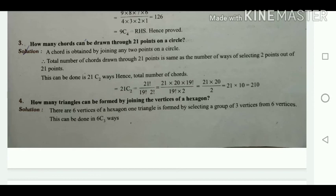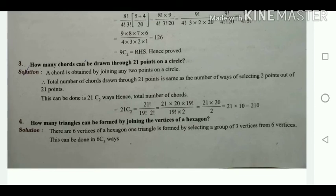21C2 = 21! / (2! × (21-2)!) = 21! / (2! × 19!). Expanding: 21 × 20 × 19! divided by 19! — the 19! cancels. Then 2 and 20 cancel, giving 21 × 10 = 210. So 210 chords can be drawn.